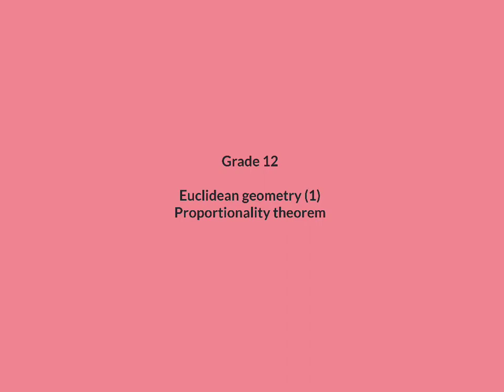In our first lesson for grade 12 Euclidean geometry, we are going to have a look at the proportionality theorem. In grade 11, we did all the theorems on circles, and in grade 12, we focused on triangles.